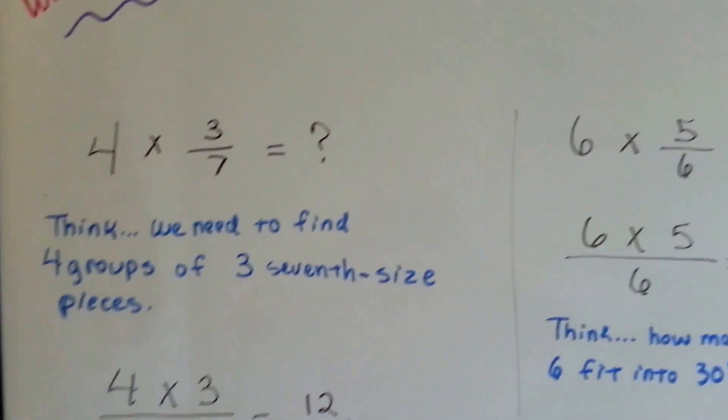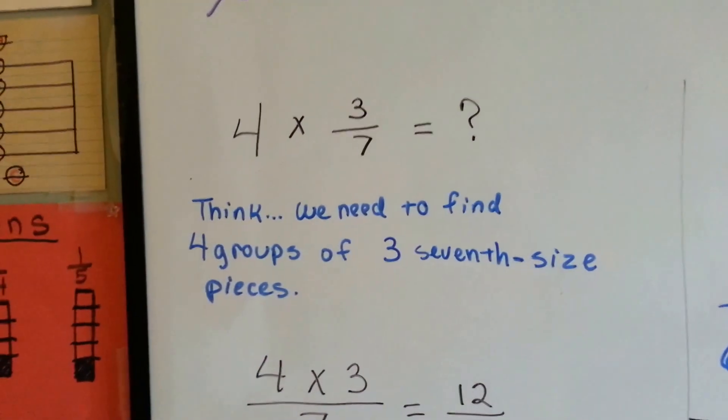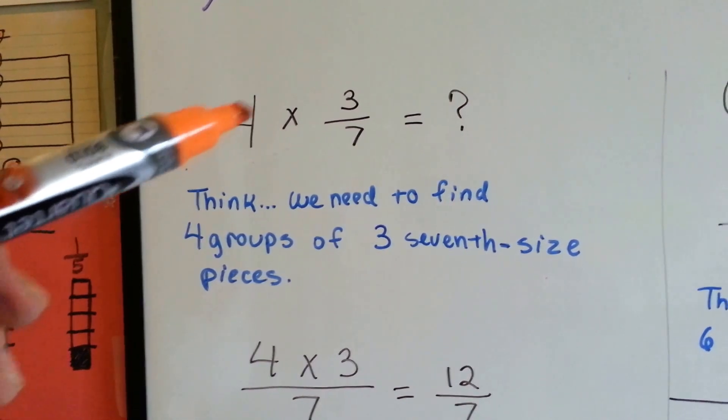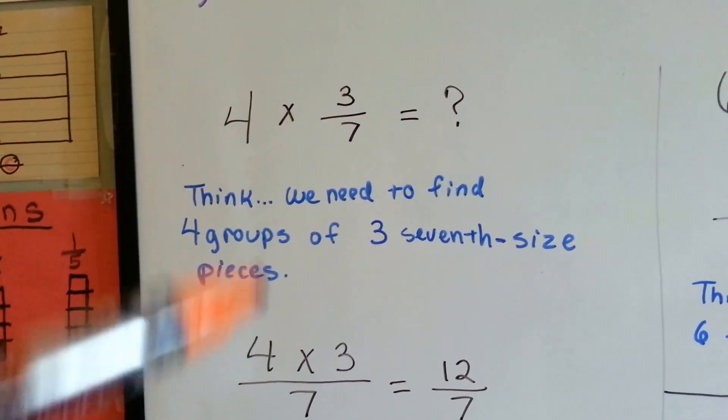So this is how we do it. 4 times 3 sevenths, we think we need to find 4 groups of 3 seventh size pieces.